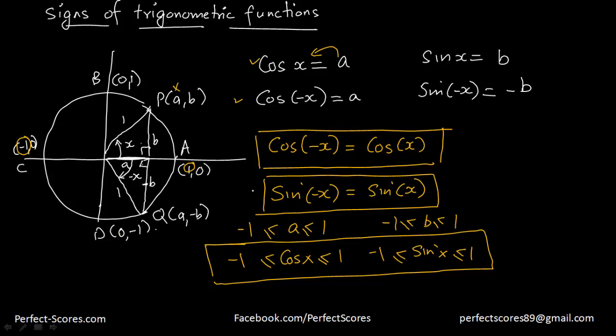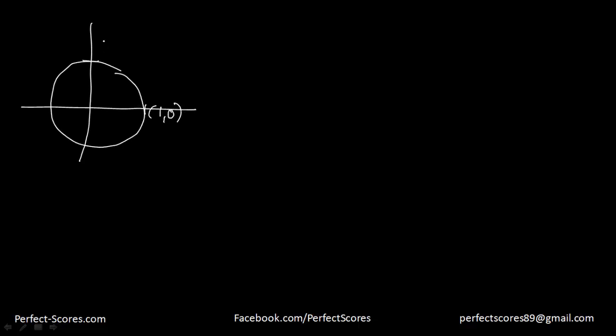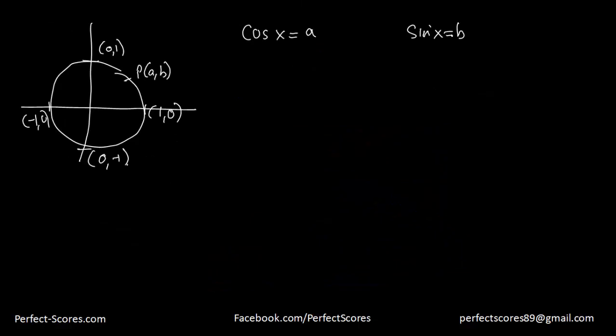Now let's understand what the signs of these functions are going to be in the various quadrants. I'll recreate our diagram: a circle with (1, 0), (0, 1), (-1, 0), and (0, -1), with point P at coordinates (a, b), where cosine of x equals a and sine of x equals b.